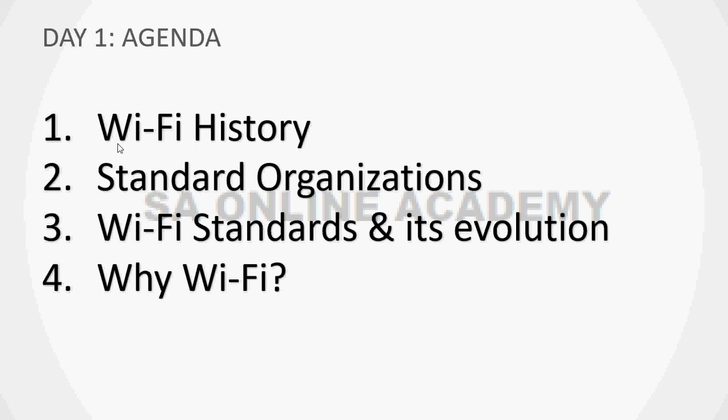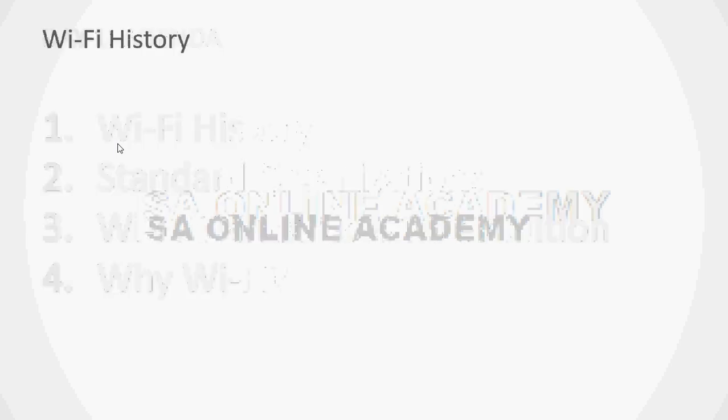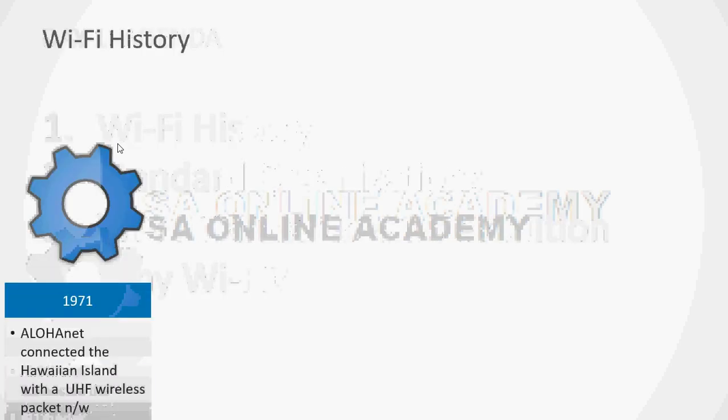The US military used spread spectrum technology to send encrypted signals. That was the very first time that wireless networking technology came into the picture, but even after two decades there was no significant development on this technology. Then finally in 1971,